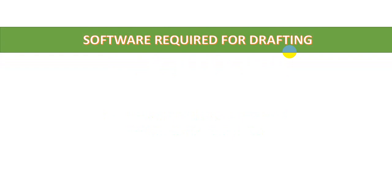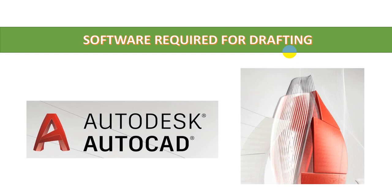First of all I'm going to discuss about software required for drafting. Drafting means the initial stage of modeling — creating a layout plan of a structure or project. For drafting, AutoCAD is best. This is the Autodesk product and the best product ever for any kind of drafting. As a civil engineer it is very essential to learn this software. Download links and tutorials are available in this channel and in the description.